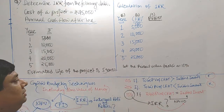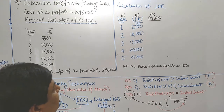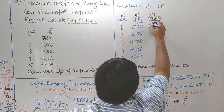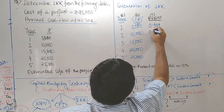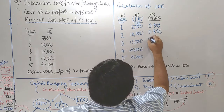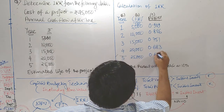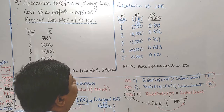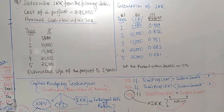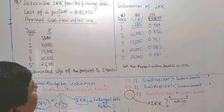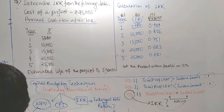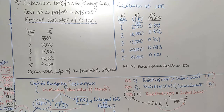Now, one by one, the PV factor at 10% is plotted here. In 10% PV factor, the values are: 0.909, 0.826, 0.751, 0.683, and 0.621. These are the PV factors at the rate of 10%. Our job is to multiply that CFAT with the respective PV factor and calculate PV of CFAT.